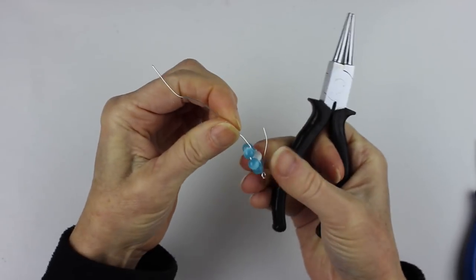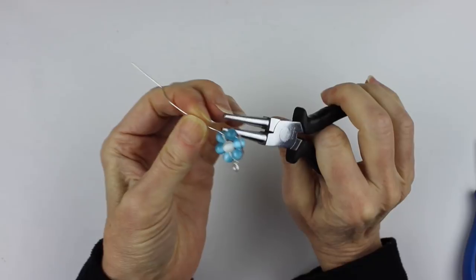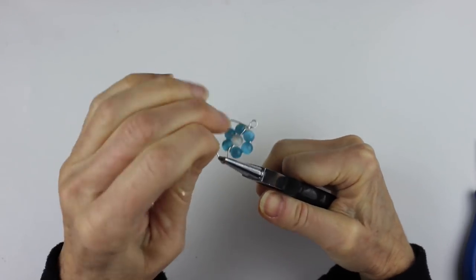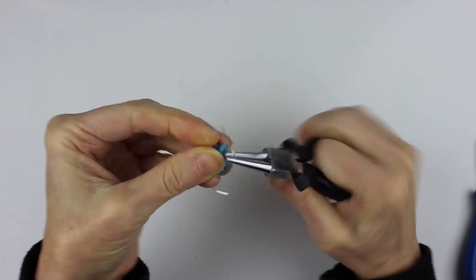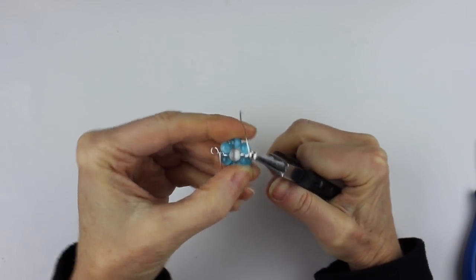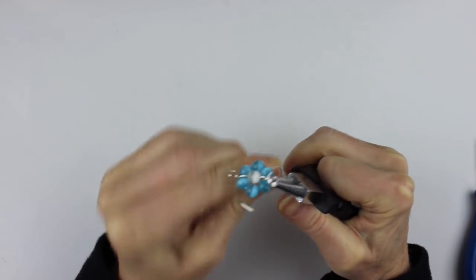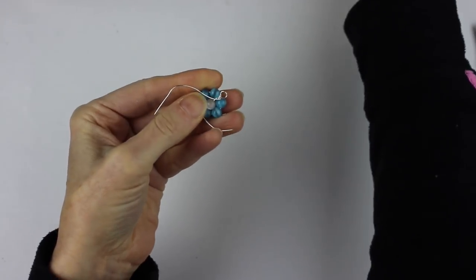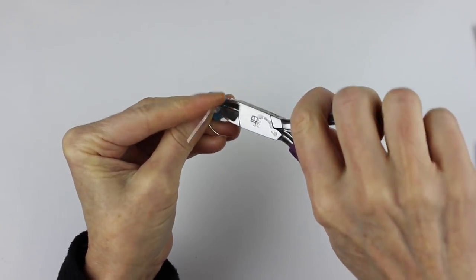Same on this side. Bend it about a 45 degree angle and then loop that around. So you have a loop that's about the same size. Turn it around a couple times and then you want to clip the ends.